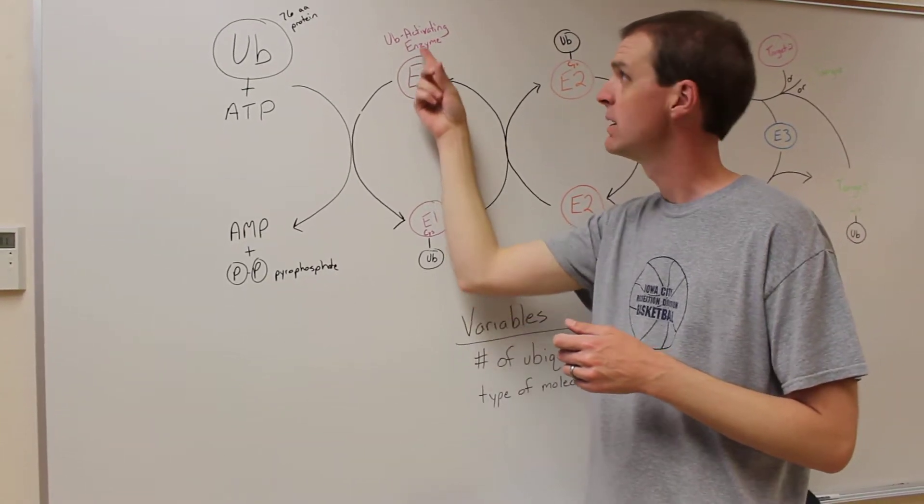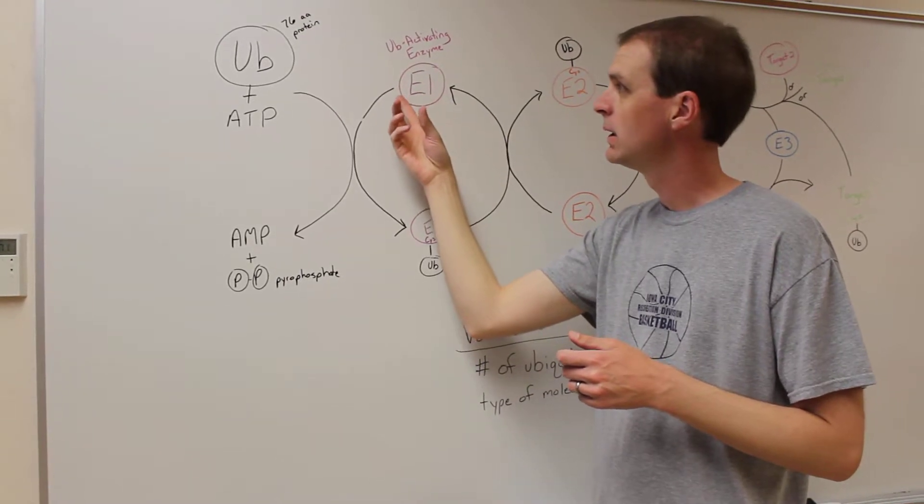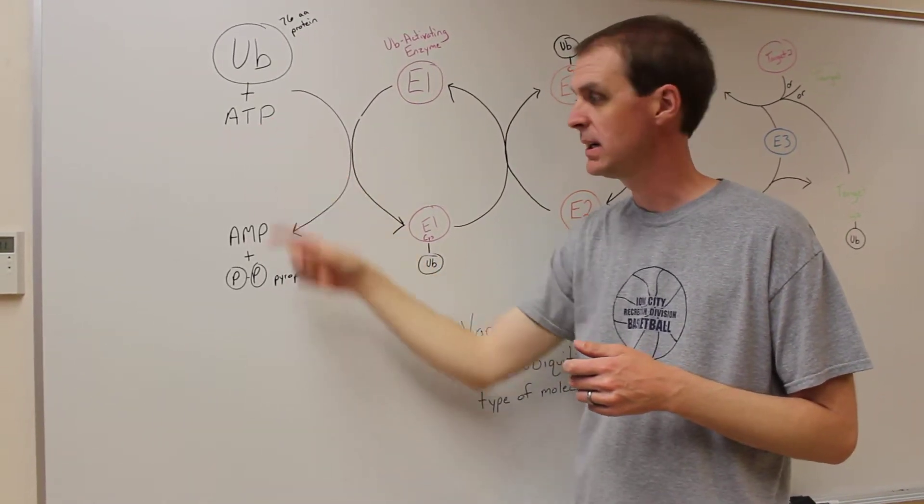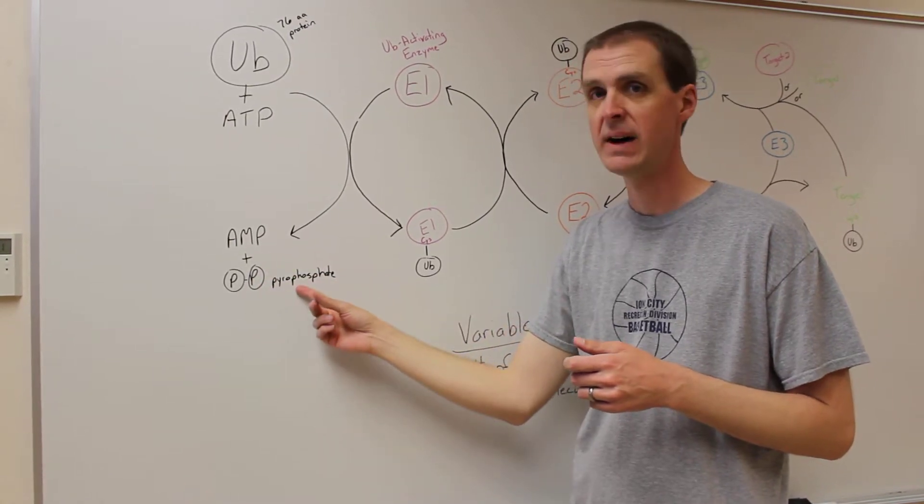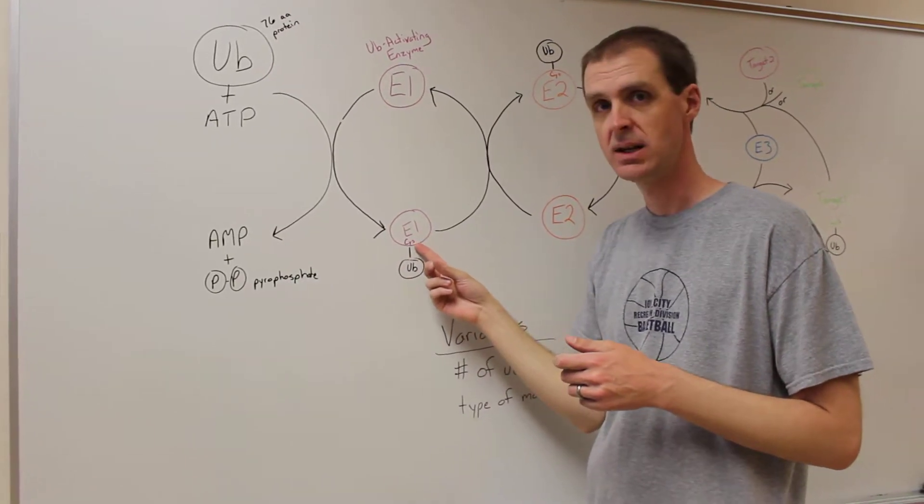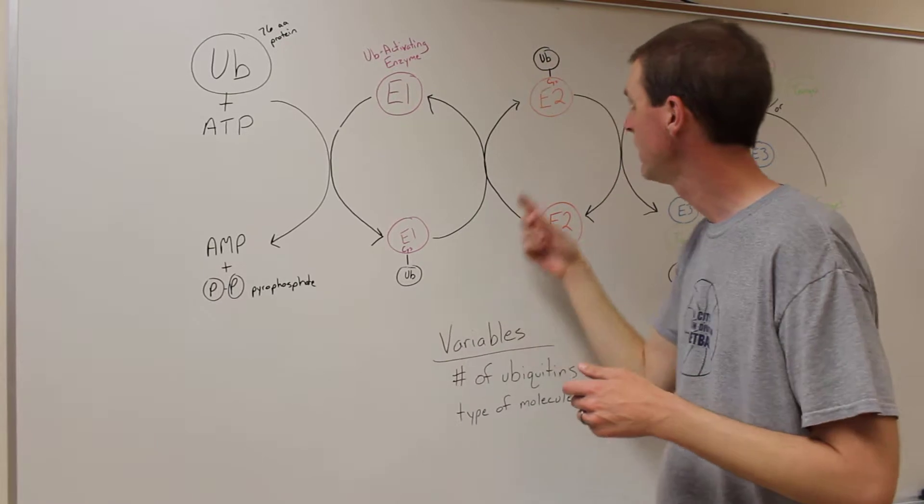How this happens is you have an E1 enzyme which is known as an ubiquitin activating enzyme. It will, with the energy from breaking down ATP to AMP and pyrophosphate, create a covalent bond between ubiquitin and a cysteine on that E1 enzyme. That covalent bond then gets transferred onto an E2 enzyme.